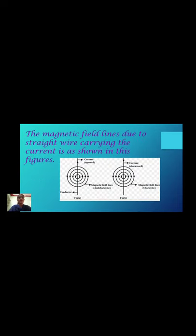The magnetic field lines due to a straight wire carrying current are shown in these figures. Observe these figures. The first one shows current in the upward direction. The second one shows current in the downward direction.